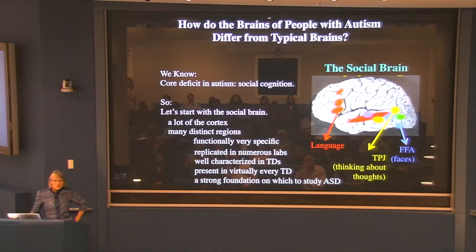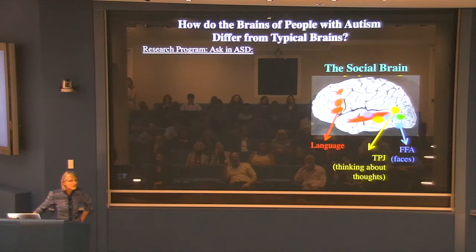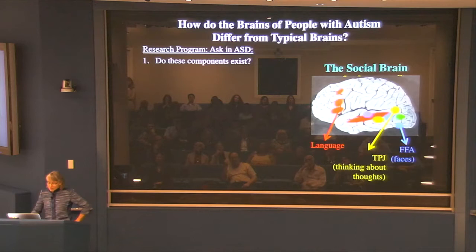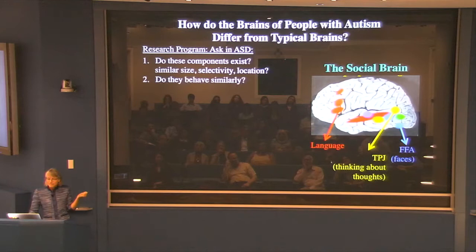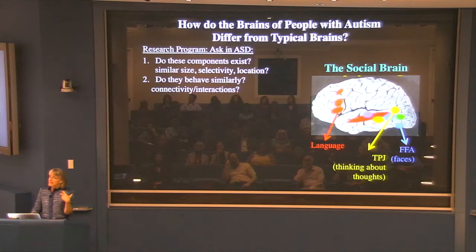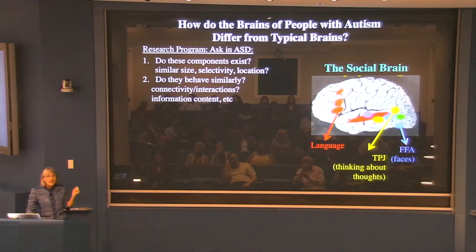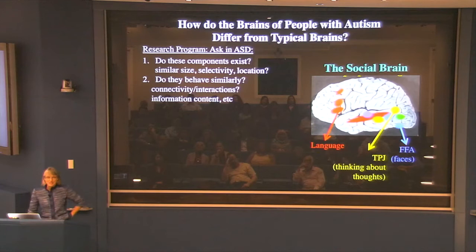This seems like a good place to start when trying to understand autism. This suggests a research program where we ask: do people with autism have all this basic architecture, all that machinery? Is it of similar size, selectivity, and location? And then we can ask whether those regions behave similarly — do they have similar connectivity, interact similarly with other regions, and contain similar kinds of information in people with autism as in typical people?